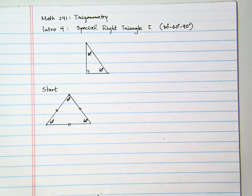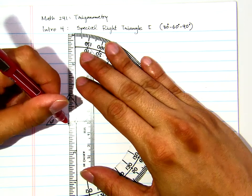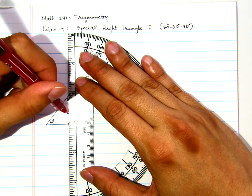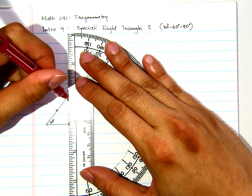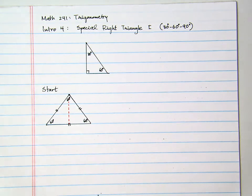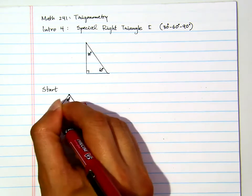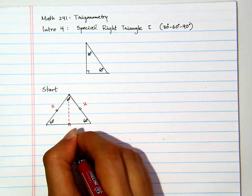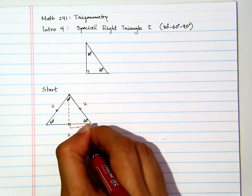What I will do then is cut it into half, here. I cut it into half. For the purpose of nice numbers, let's say that the length of the sides are two. Therefore, once I cut it into half, this becomes one.